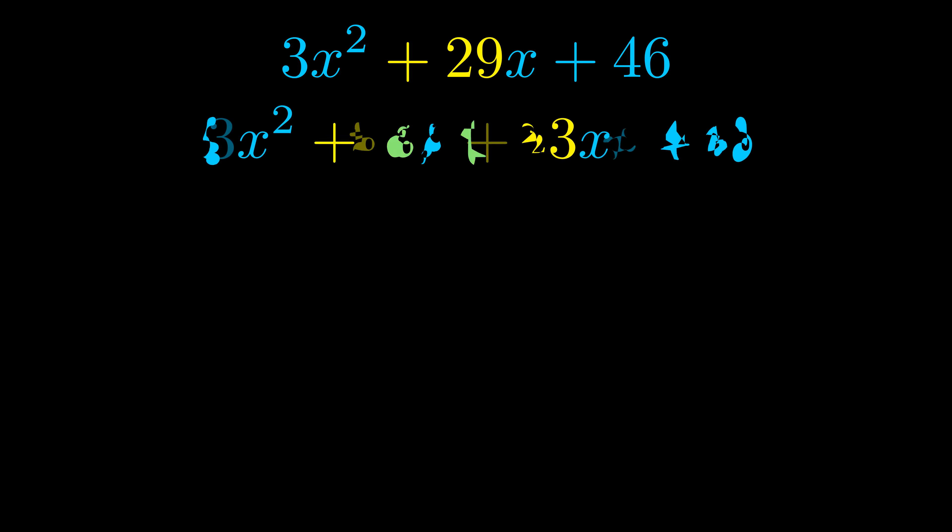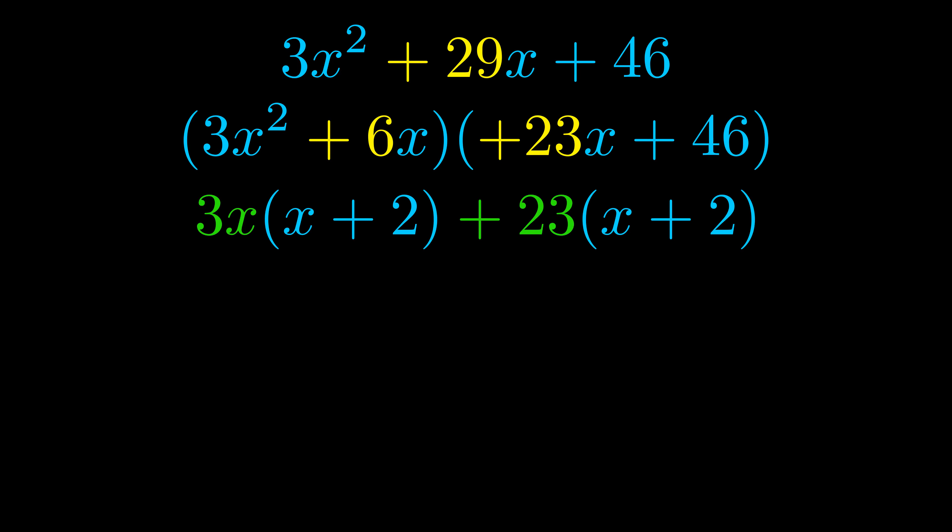Once we've done this, we go ahead and we put parentheses around the first term and the last term. And we do that so that we can take the greatest common factor out of both terms. We can see the greatest common factor is now outside in green.